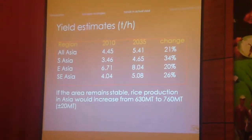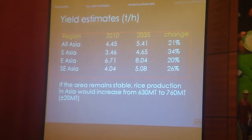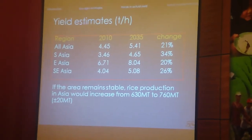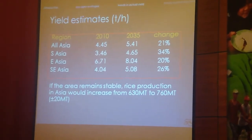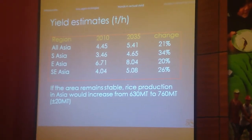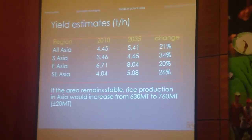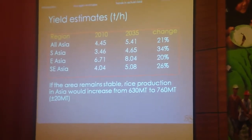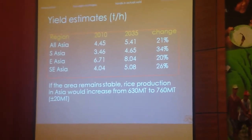Starting at the continental level, these are the yield estimates for 2010 in tonnes per hectare. Across all of Asia, about 4.5 tonnes per hectare. We see variations when looking at South Asia, East Asia, and Southeast Asia — East Asia having the high yield, South Asia and Southeast Asia slightly less. Projecting out to 2035, we generally see an increase of about one tonne per hectare over 25 years. If we assume that the area of production stays constant, that translates to a change in production from 630 million tonnes to 760 million tonnes in the future.